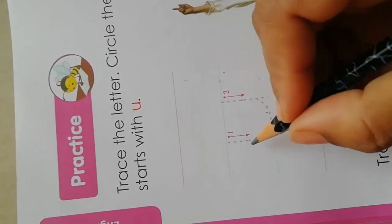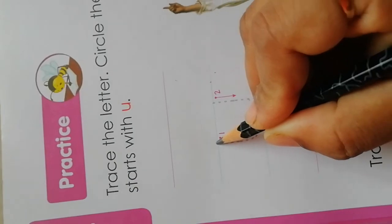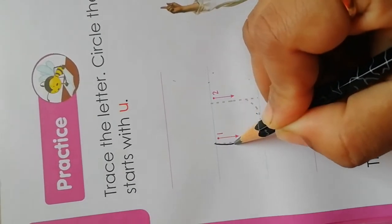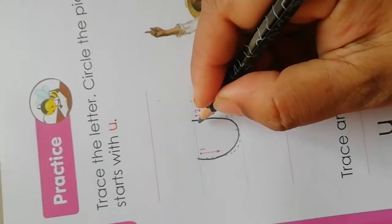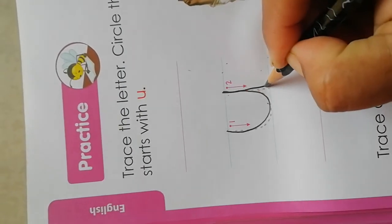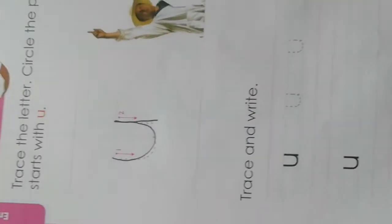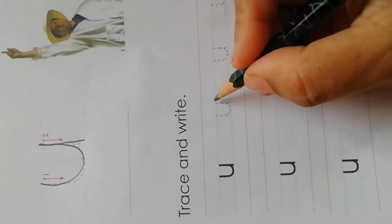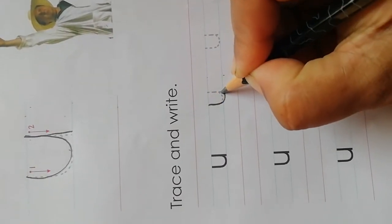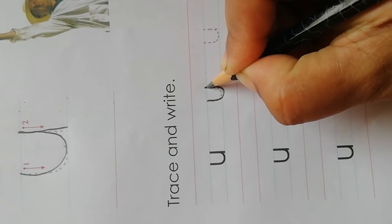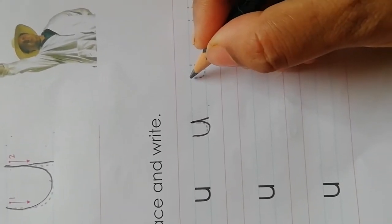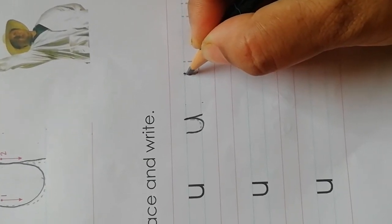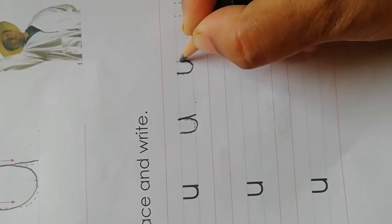Now how to trace: blue line to blue line, upward open curve, then standing line. Again, we have to trace—see, blue line to blue line, upward open curve, then standing line. Again, blue line to blue line, upward open curve, then standing line. Small u.